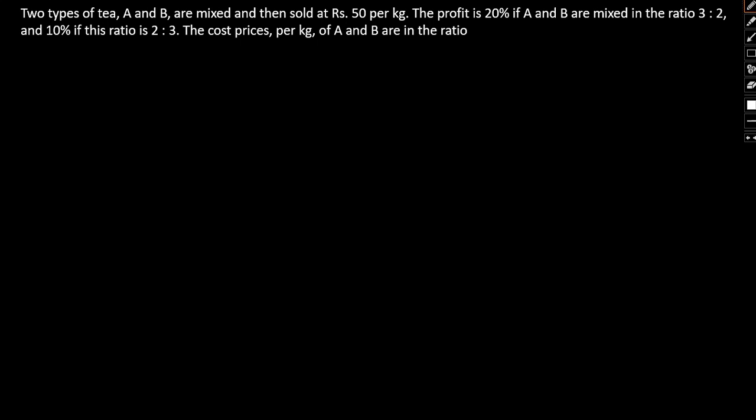Two types of tea, A and B, are mixed and then sold at rupees 50 per kg. The selling price is given as 50 per kg. The profit is 20 percent if A and B are mixed in the ratio 3:2. So A is to B is 3:2, and profit is 20%.